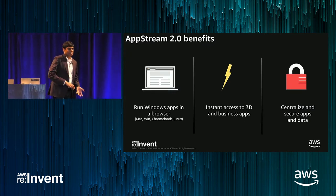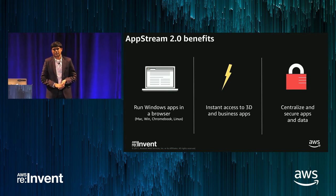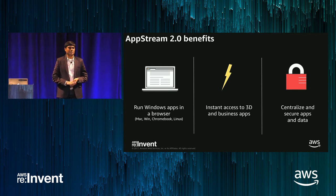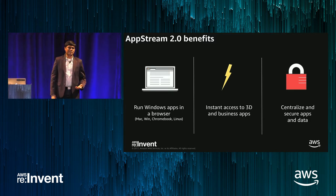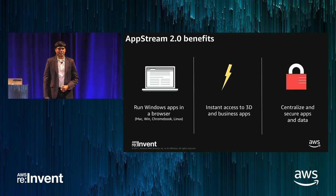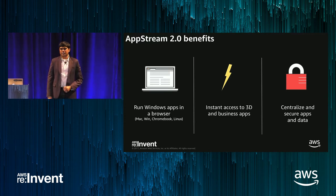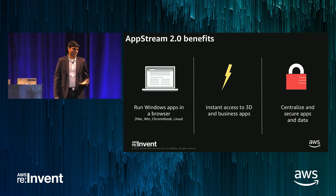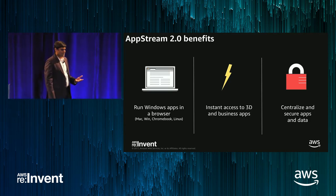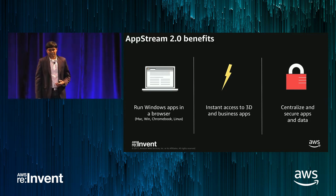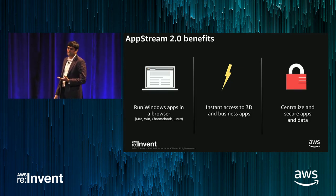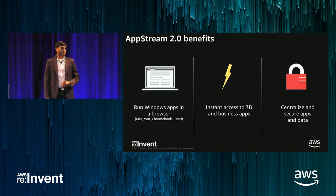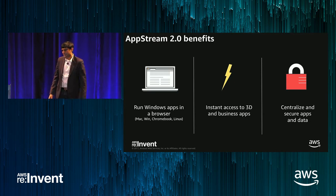There are six benefits I'm going to talk about. First, you can run Windows apps on any device — regardless of whether you have a Mac, a Chromebook, or a Linux desktop, you can still use powerful Windows applications. You get instant access as a user to your applications. There's no need to install an application or request approvals to install on your local device. Instead, you simply go to a browser, a catalog of applications is available to you, you click on an application and just get started.